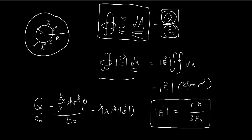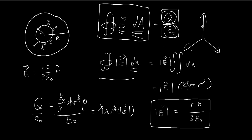Don't forget the electric field is actually a vector, so we can update this expression to include the direction as well. We define r̂ as the unit vector pointing in the radial direction. Expressing the answer in spherical coordinates: at any point inside this smaller sphere of radius r, the electric field has the magnitude we derived and points in the radial direction, r̂. So the final answer is E = (rρ / 3ε) r̂.